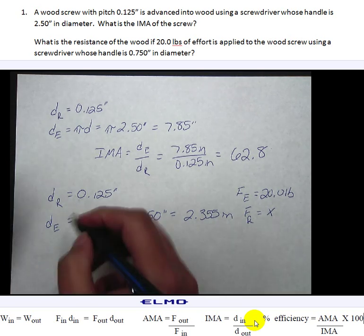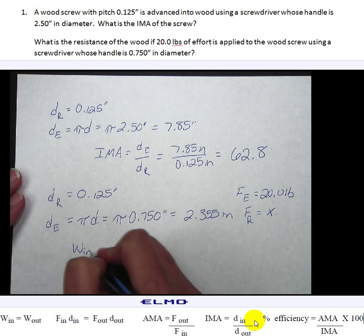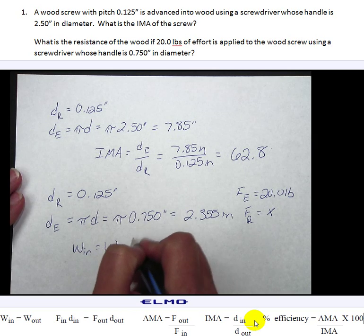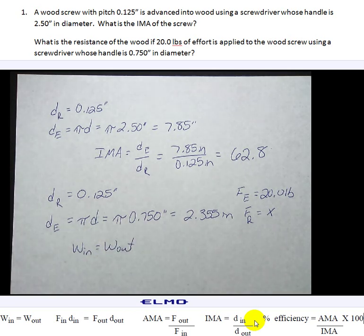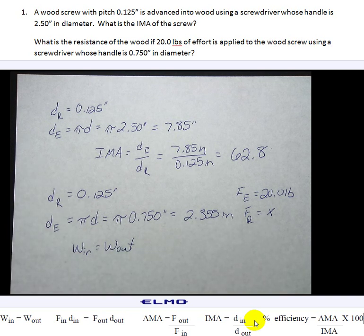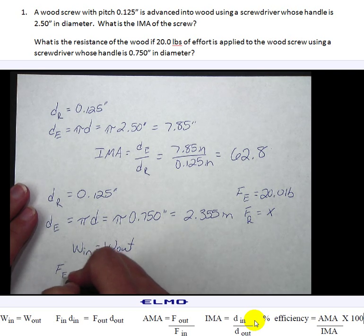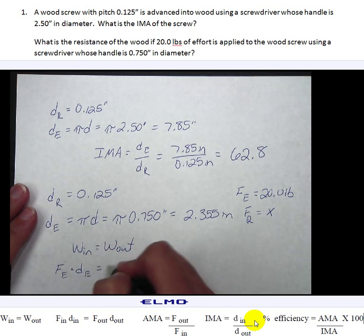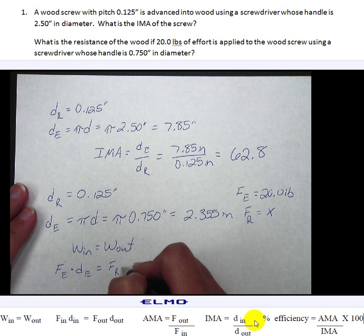When we set this problem up we're going to look at it as work in equals work out. So we know however much effort we put in, the amount of work we put in has to equal the amount of work we get out. So when we look at this it's force of our effort times the distance of our effort has to equal the force of our resistance times the distance of our resistance.